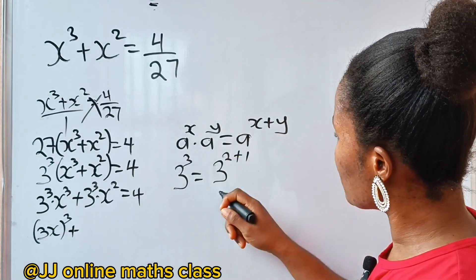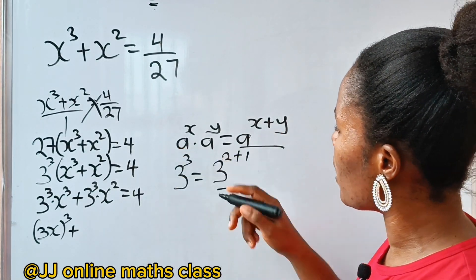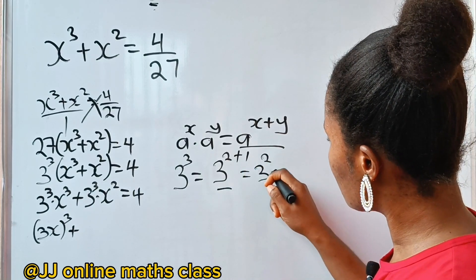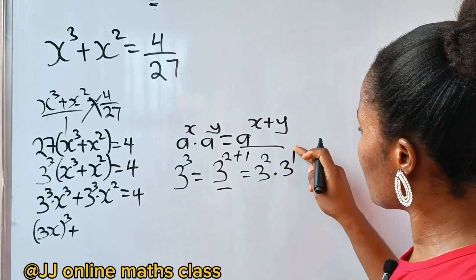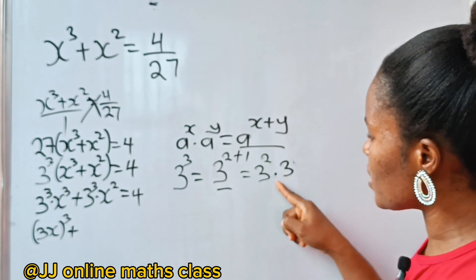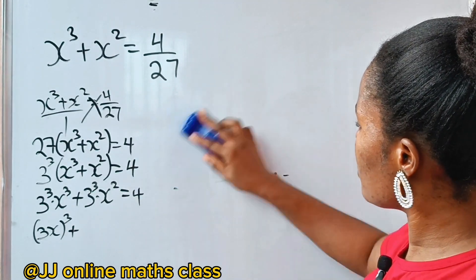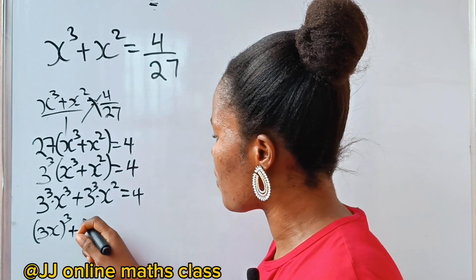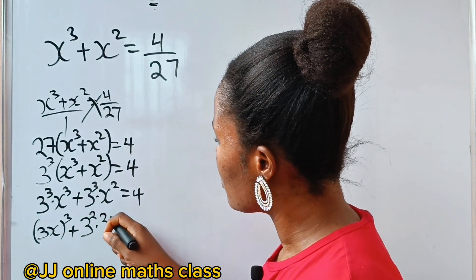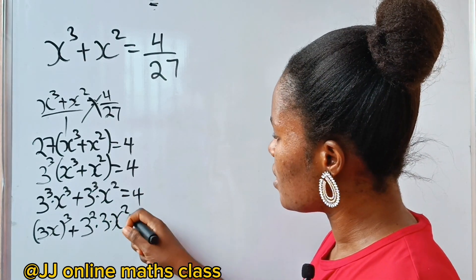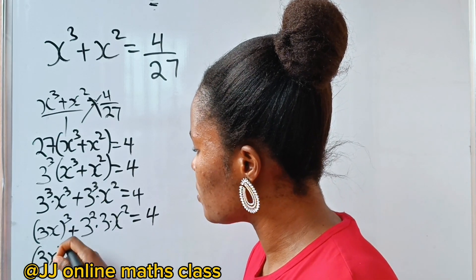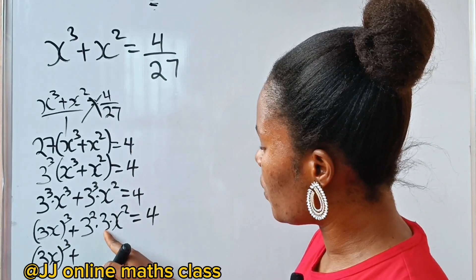That means we can write 3³ as 3² times 3¹, which is the same as 3² times 3. So we express 3³ as 3² times 3. Applying this, the second term becomes 3² times 3 times x squared, which we can write as 3 times (3x)², giving us (3x)³ plus 3(3x)² equals 4.